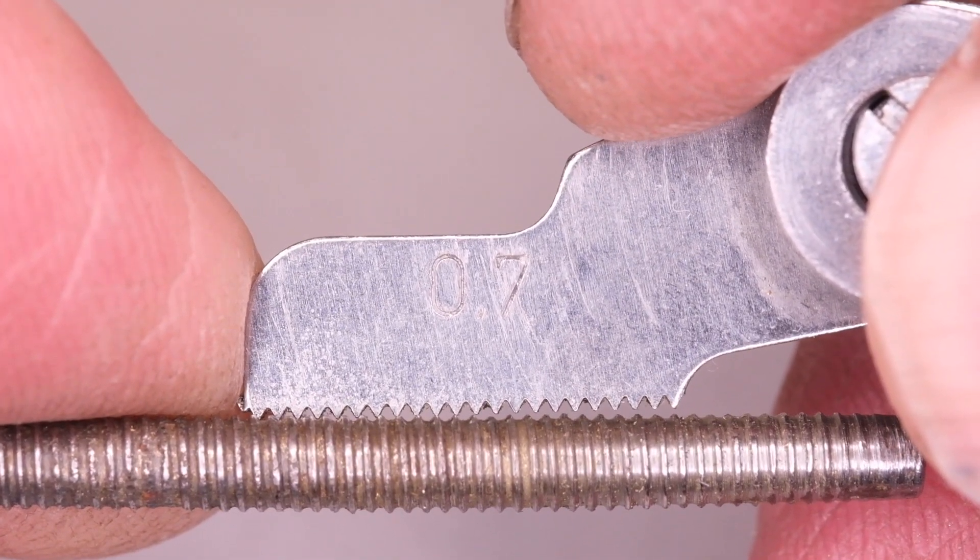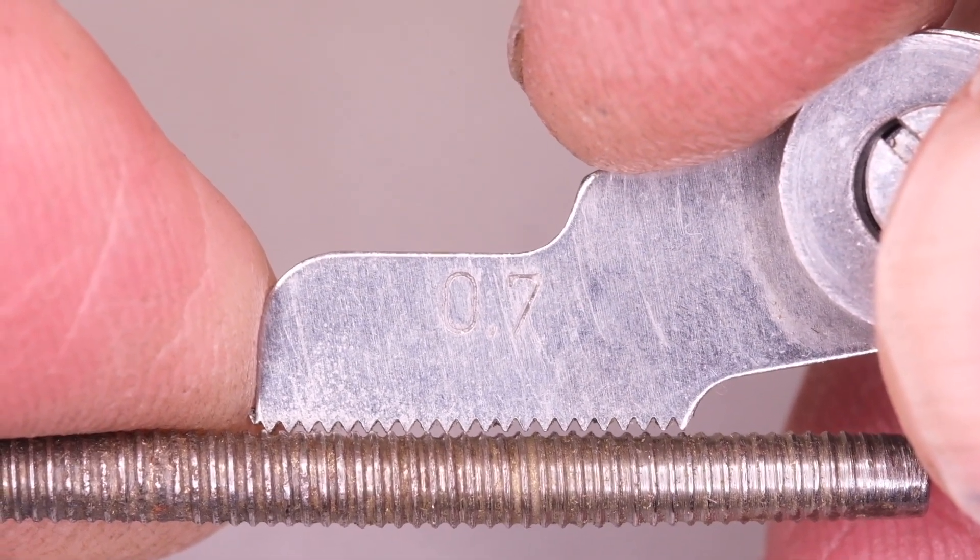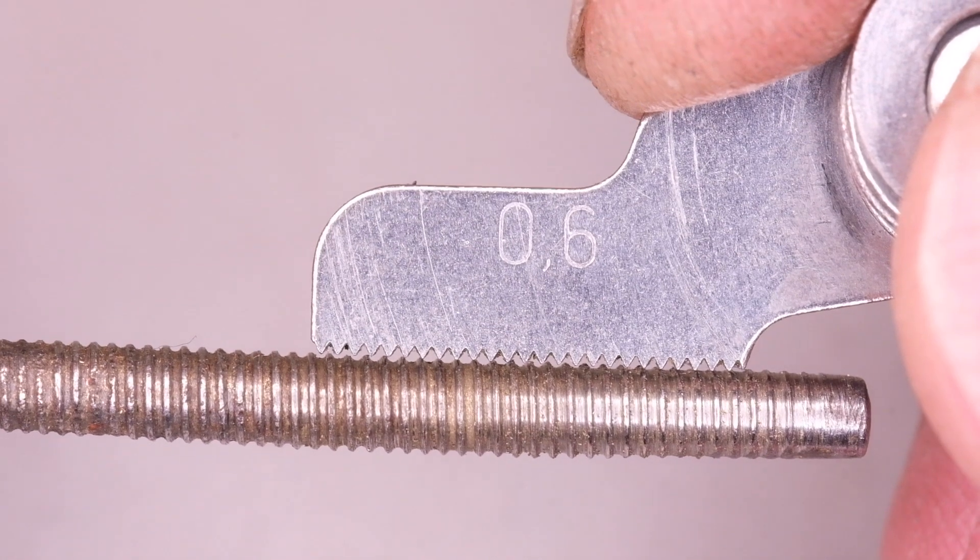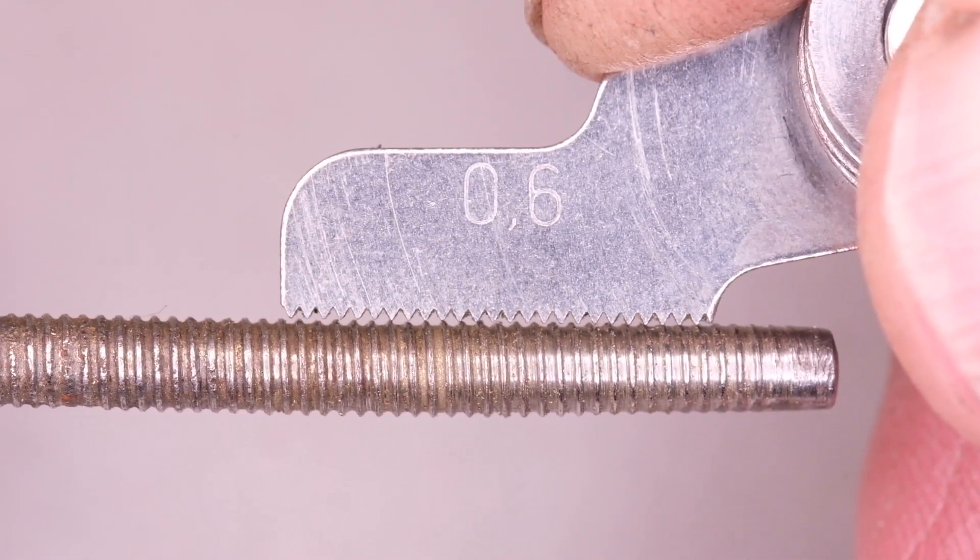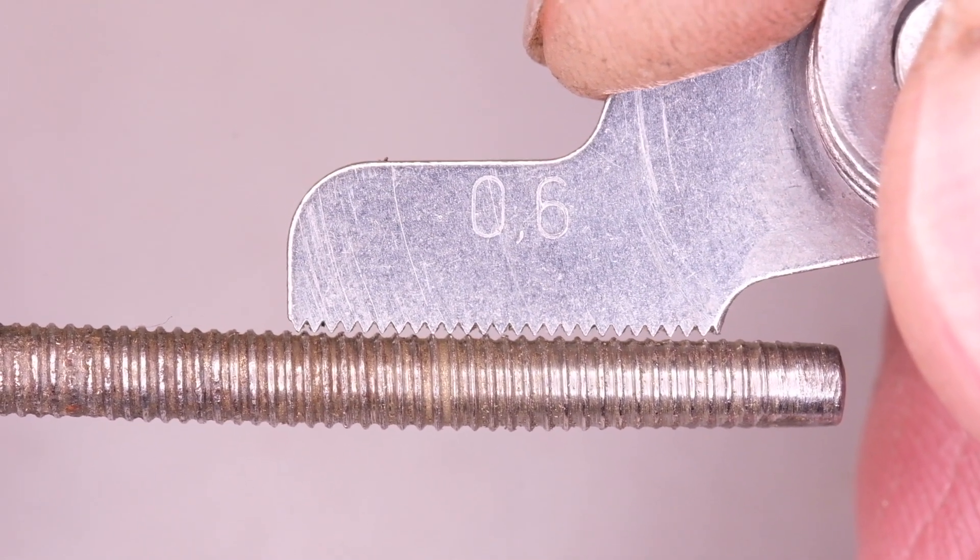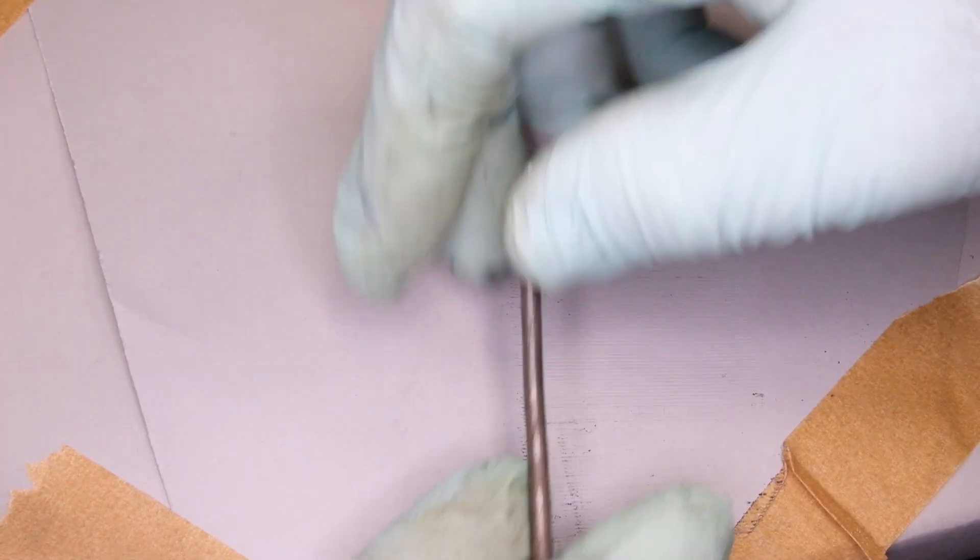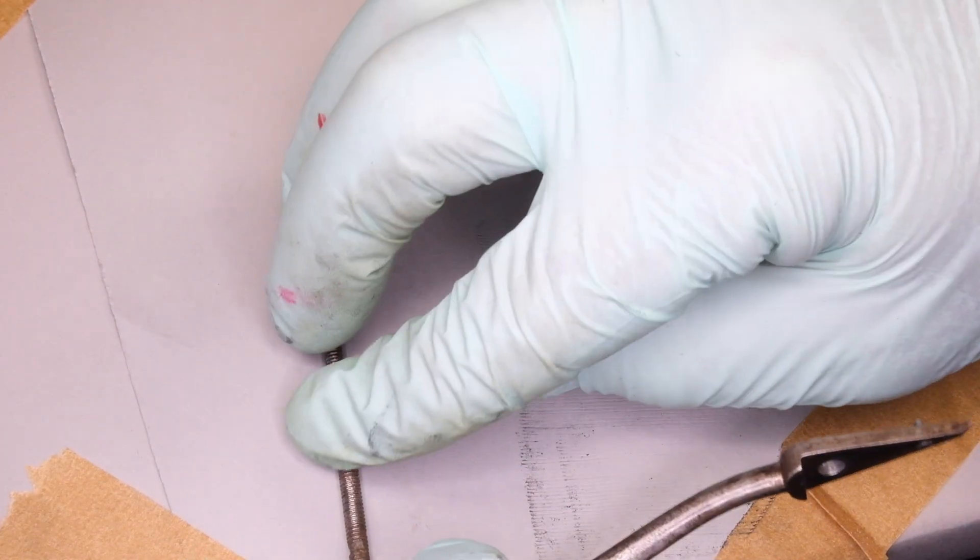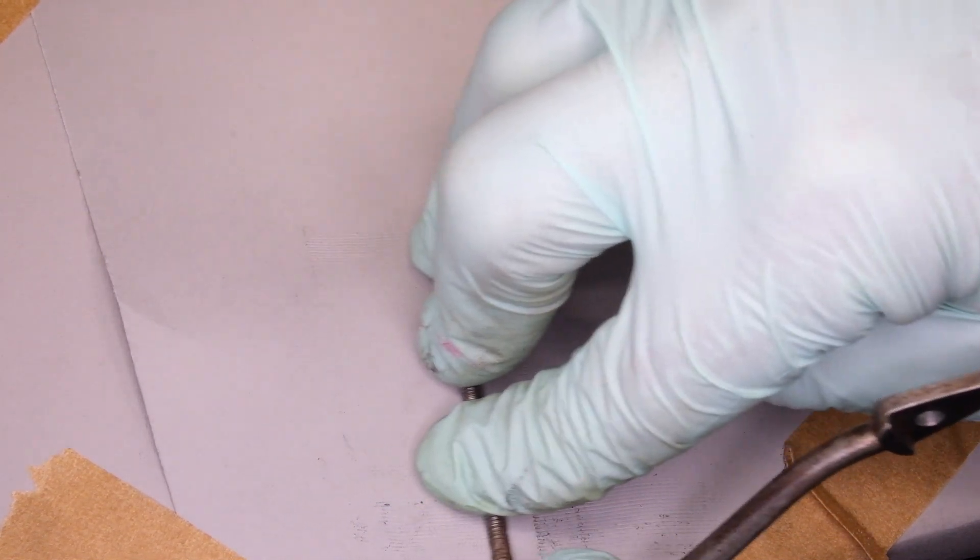We can see that our thread that we're trying to match is slightly finer than that and when we look at the next one in the set which is 0.6 of a millimeter we can see that the thread is slightly coarser than that. So we know that our thread lies somewhere between 0.6 and 0.7 millimeter pitch but that doesn't give us a massive amount of resolution.